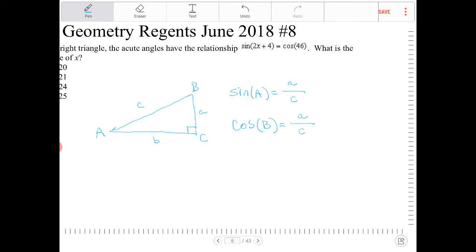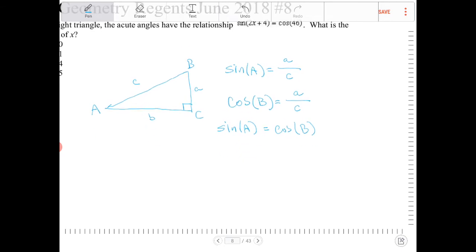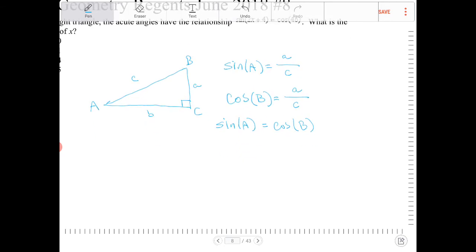You can see here that sine A and cosine B are actually equivalent. Sine of capital A equals cosine of capital B. Now, under what circumstances are these two things going to be the same? A and B do not have to be equivalent, right?